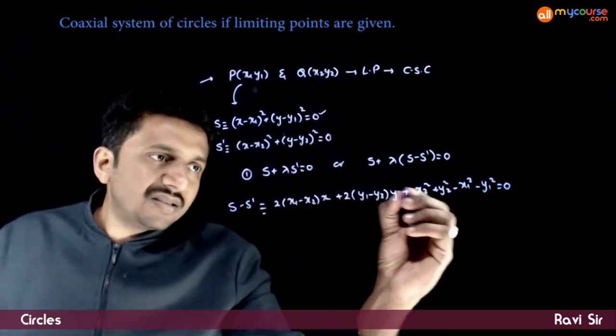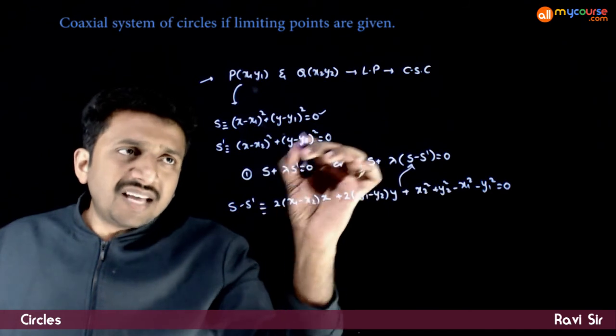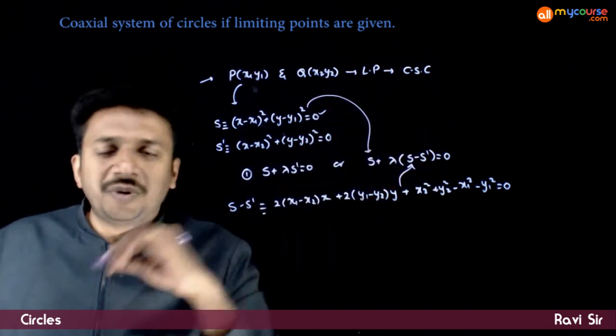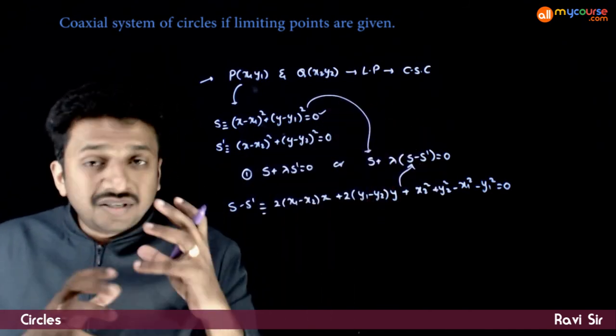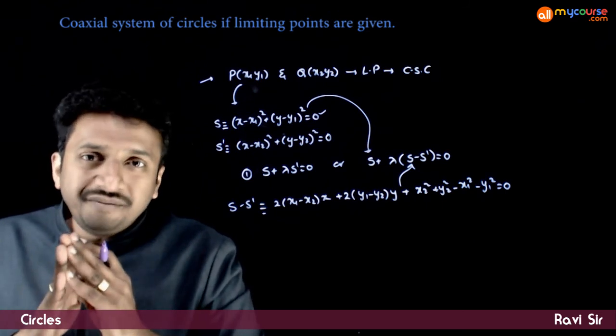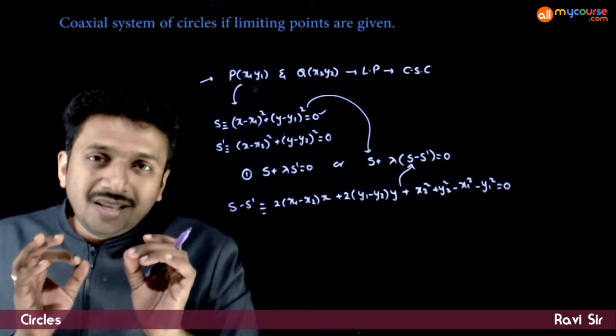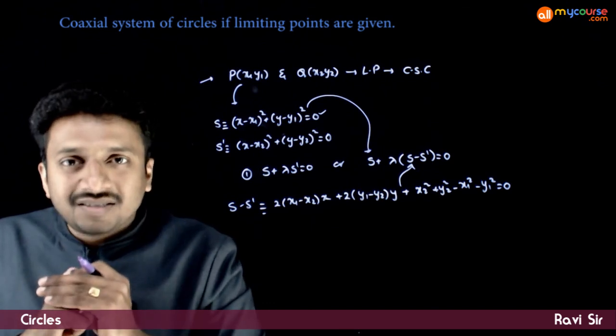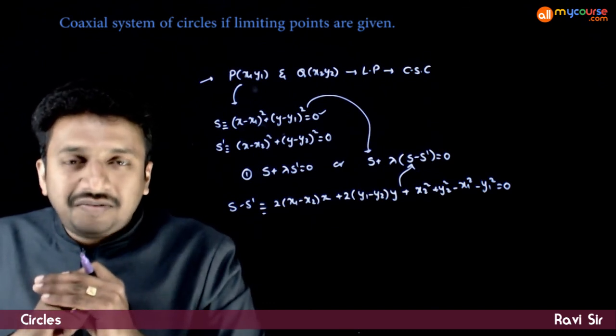This has to be substituted in this place and S can be taken as any of the expressions. So this is how you find the coaxial system of circles if the limiting points of the system are given. Thank you.